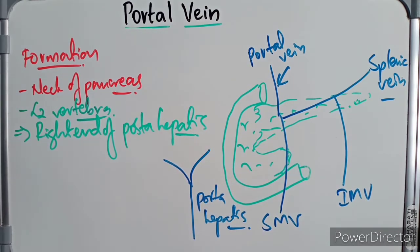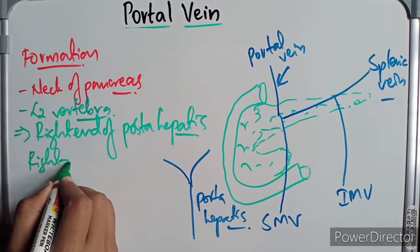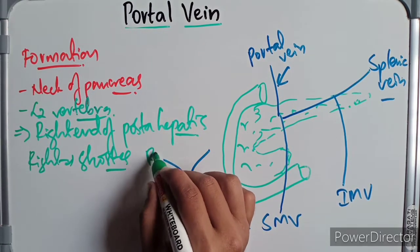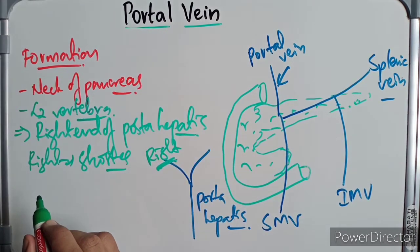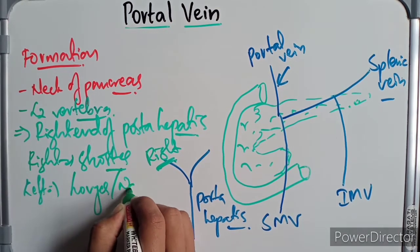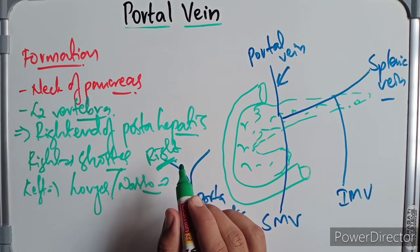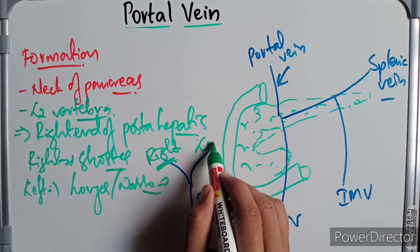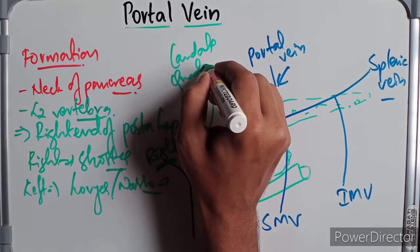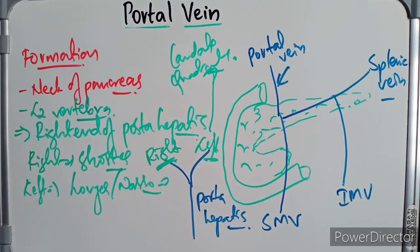The right branch is shorter and wider and enters the right lobe of the liver. The left branch is longer and narrower, passing to the left end of the porta hepatis and giving branches to the quadrate lobe of the liver. It then unites with the para-umbilical veins before entering the left lobe of the liver.